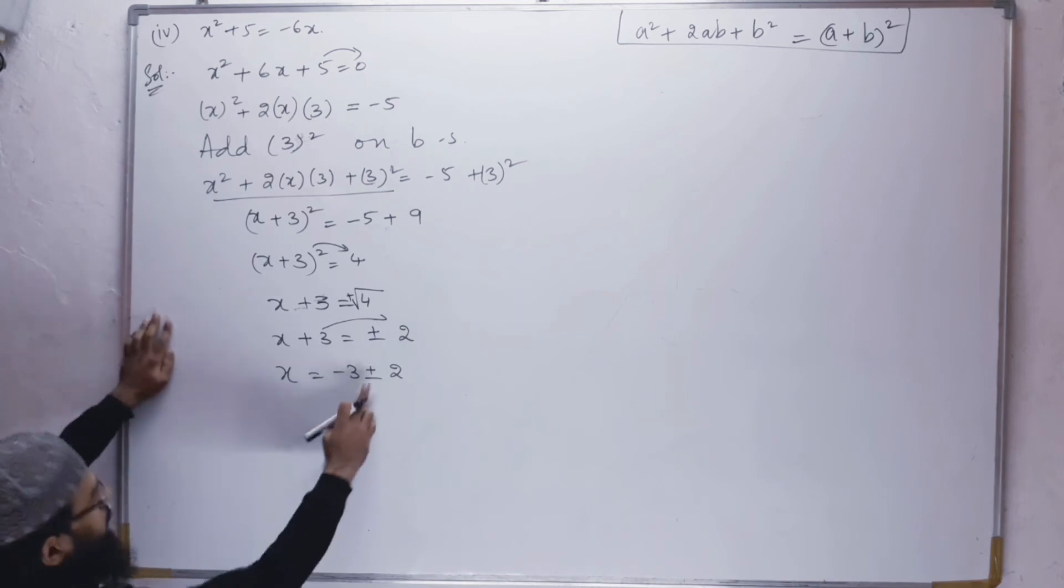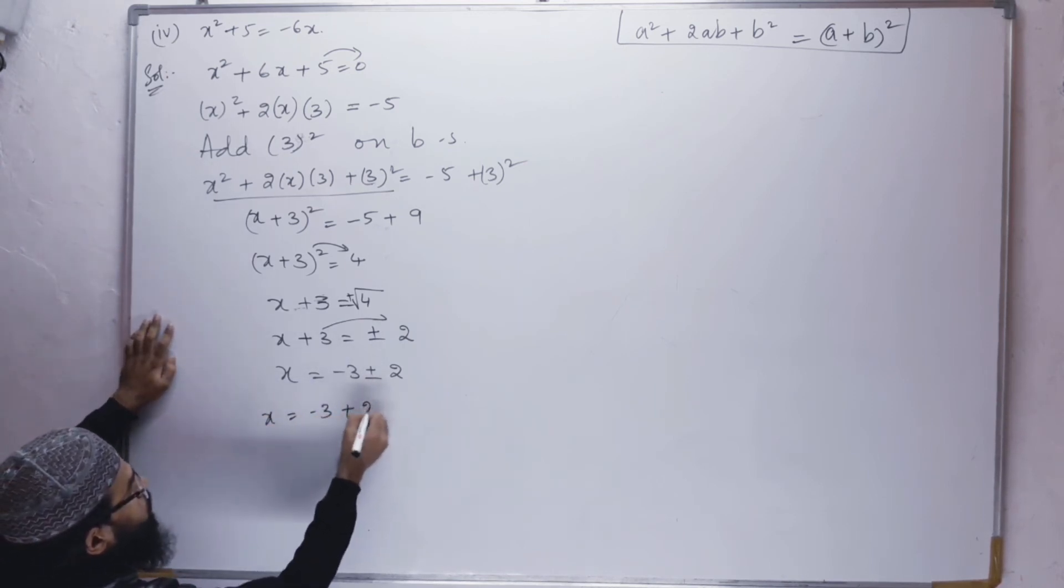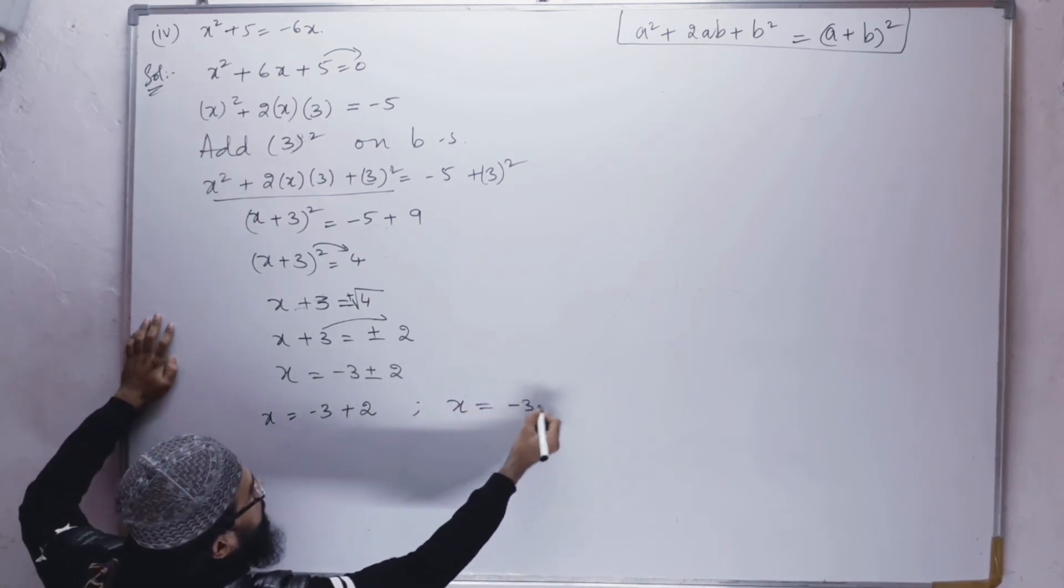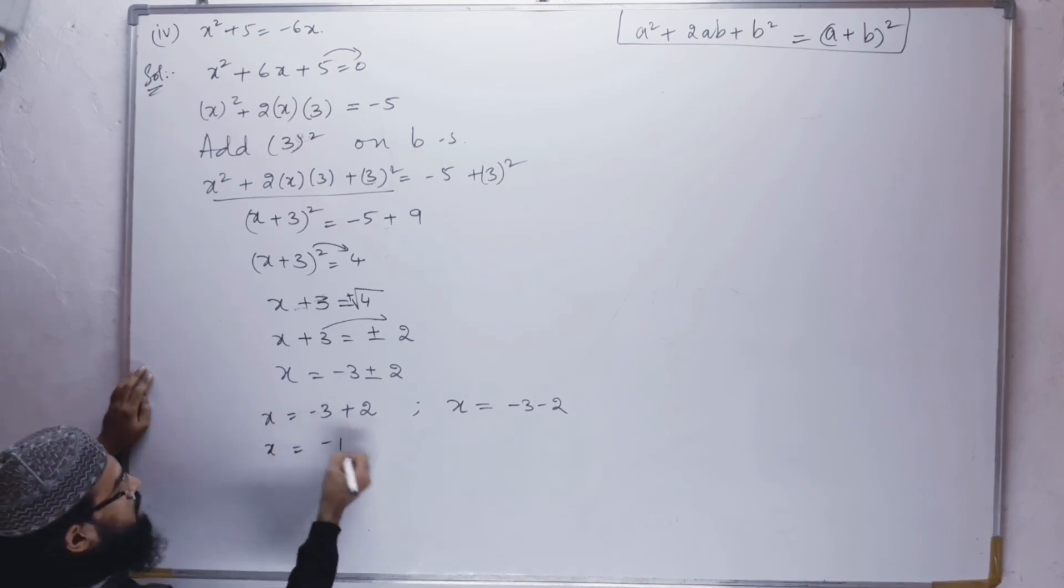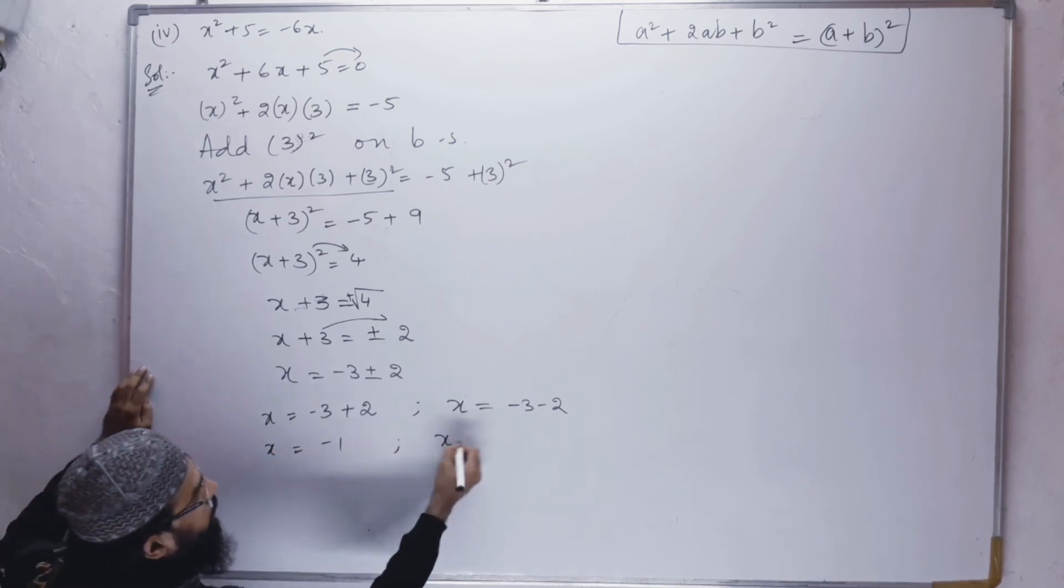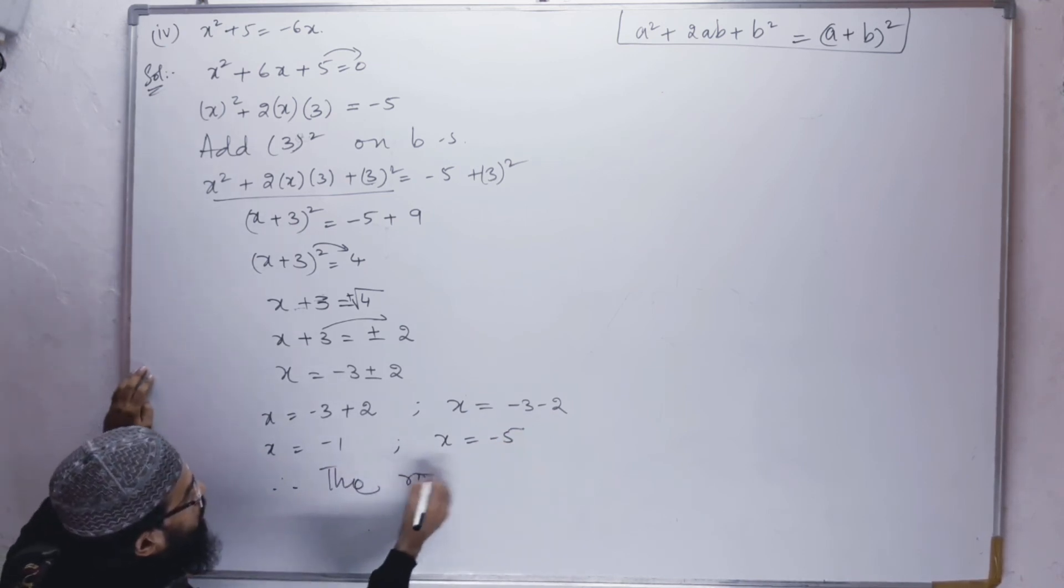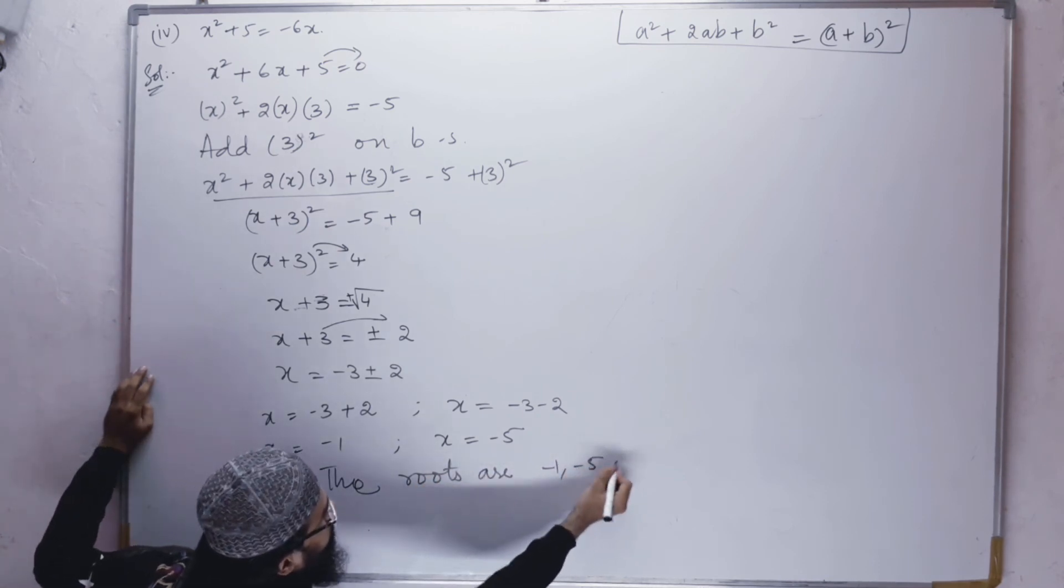Taking the plus sign: x = -3 + 2 = -1. Taking the minus sign: x = -3 - 2 = -5. Therefore, the roots are -1 and -5.